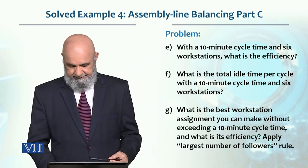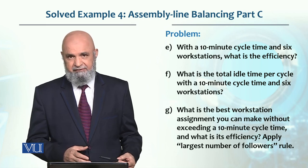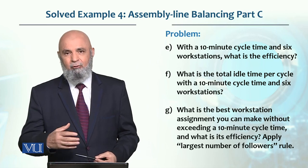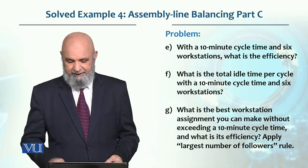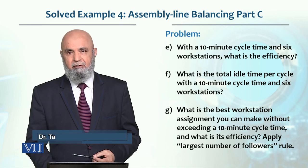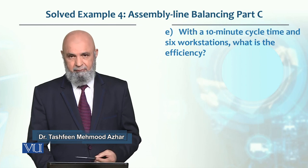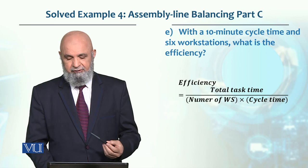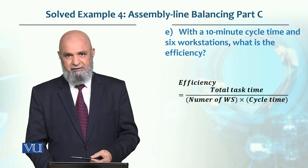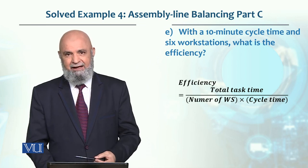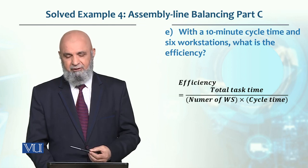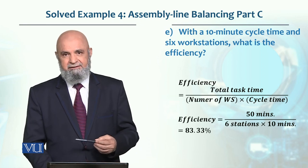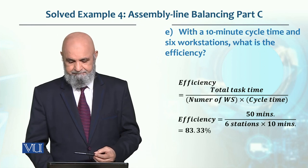With six workstations, efficiency is basically total task time (50 minutes) divided by number of workstations (6) multiplied by cycle time (10). So this is 50 divided by 60, which gives an efficiency of 83.33%.